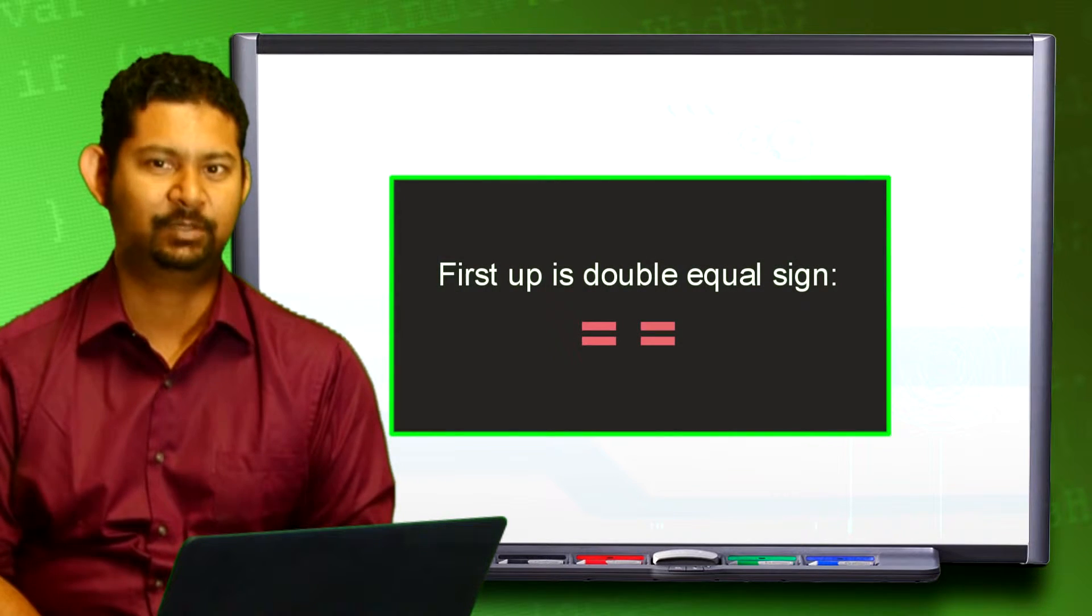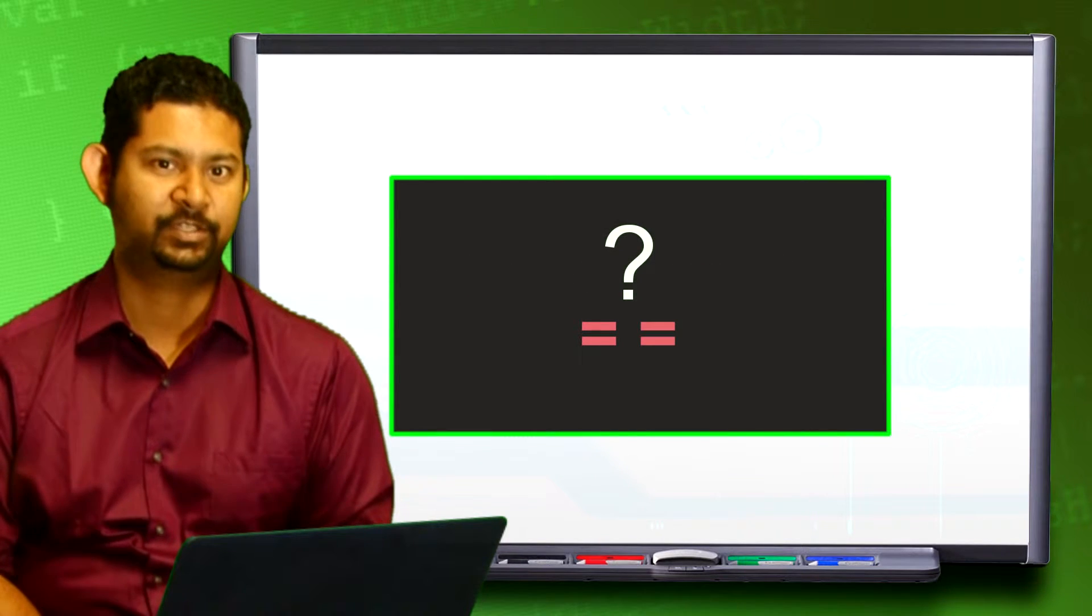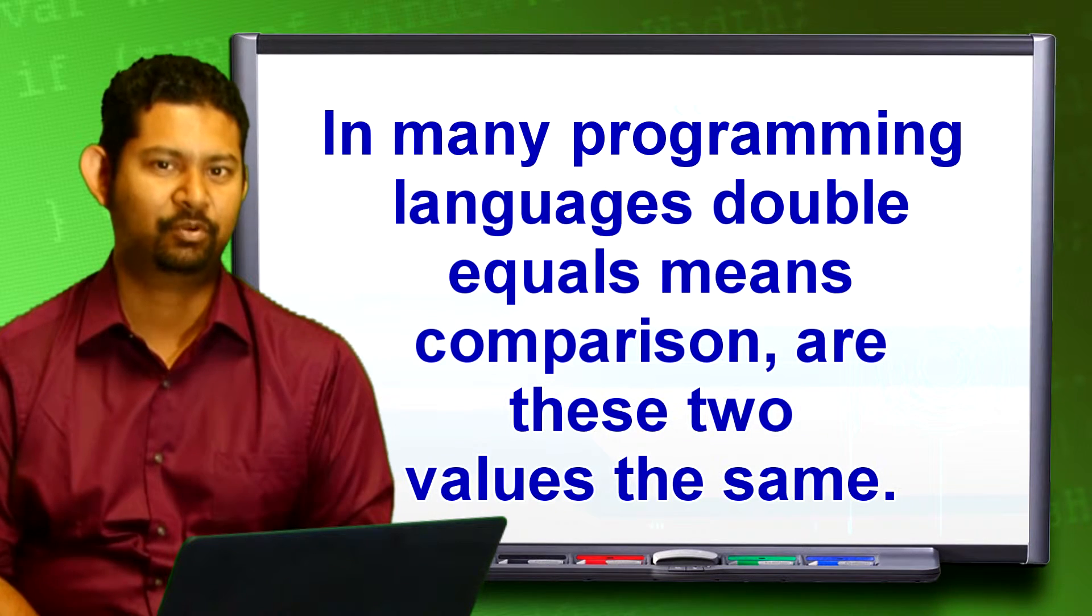First up is the double equal sign. This is the equal to operator. It checks if two values are the same. Right now you may be asking yourself why two equal signs? In many programming languages, double equals means comparison. Are these two values the same?